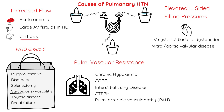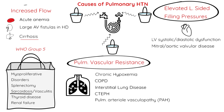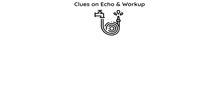To recap the framework: in a patient with elevated pulmonary pressures, you want to ask yourself — is it because the left-sided heart pressures are up? Is there high pulmonary vascular resistance? Or is there high flow across the pulmonary circulation? How can the echo clue us in to which of these three pathophysiologic buckets may be the primary cause of the high PASP?